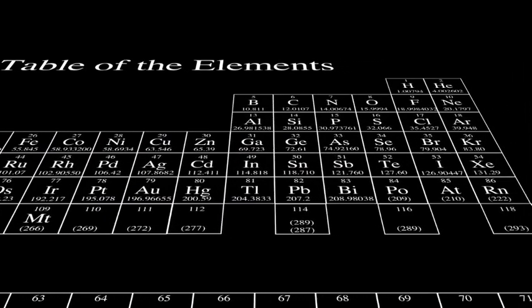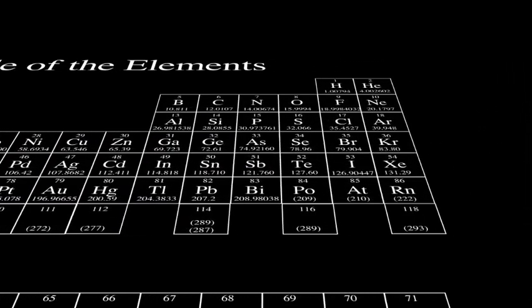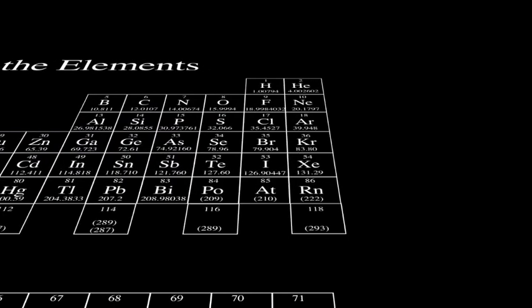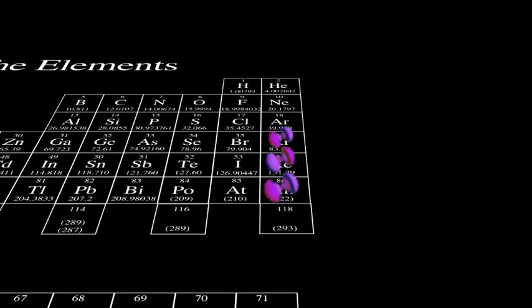All of the elements in the table are arranged into groups based on different values of l. Elements in a given column have their outer electrons in similarly shaped orbitals. And this means they have similar chemical properties.